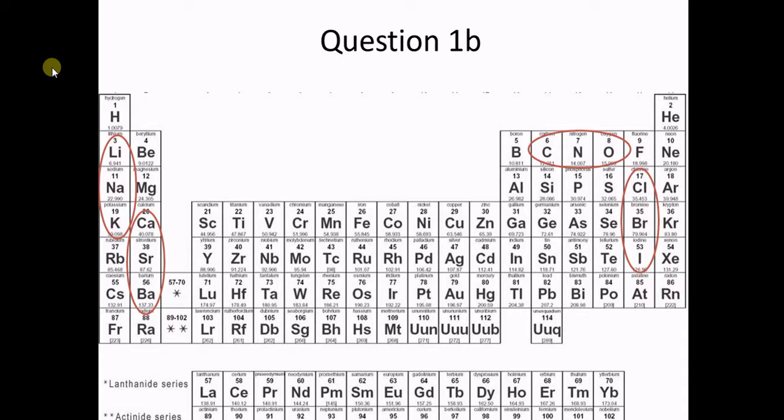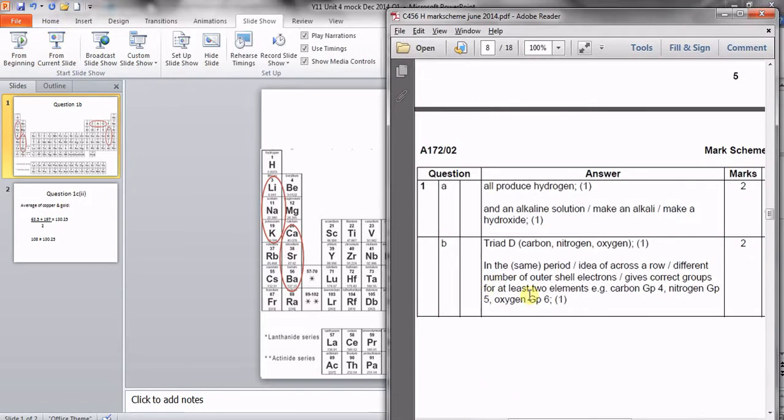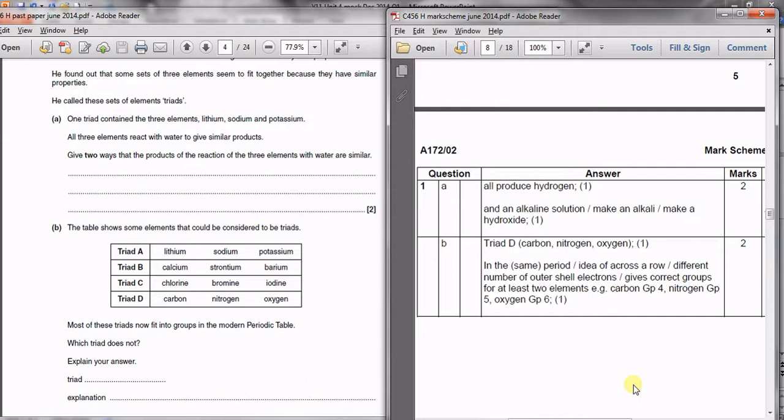That's all you had to point out for the answer. If we look at the mark scheme here it says you need to pick triad D. Just look back at which one triad D was - carbon, nitrogen and oxygen - and the reasoning is because they're all in the same period or across the row.